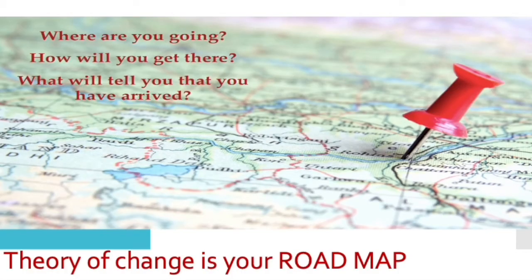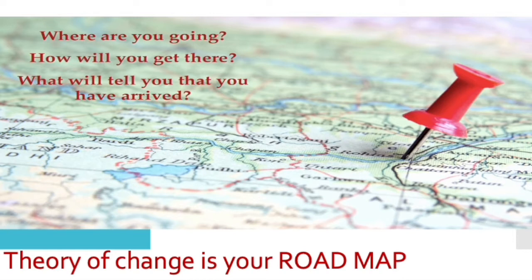When we start a project or an intervention we sort of know where we would like to go and what we would like to accomplish, but what is missing sometimes is that middle part — what are the steps that we need to take in order to accomplish that goal. Oftentimes organizations, especially nonprofits, are doing their work day to day and they might not know if they are accomplishing their goals. So a theory of change is sort of a road map of where are we going, how will you get there, and how we know that we have arrived.